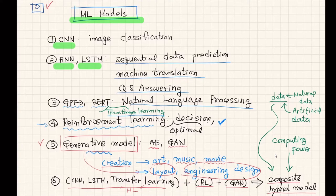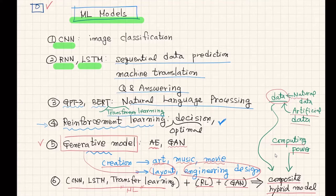In order to achieve that, we need high computing power — that is always the requirement of machine learning — and we need data, which may come from social networks, libraries, or computer simulation. To reach this composite hybrid model, we have to first go through a generative model today. From next week, I'm going to spend a couple of weeks talking about reinforcement learning. Those are the big picture of my class.